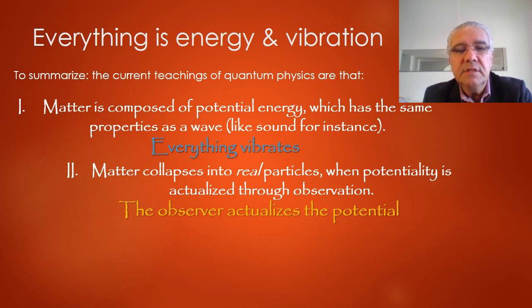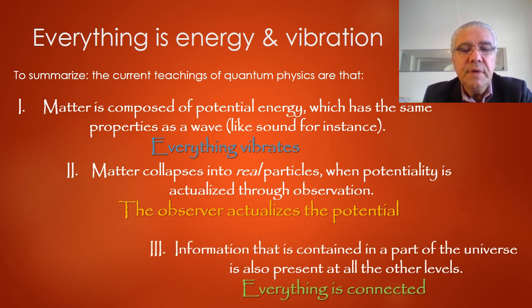Second, that matter collapses into real particles when that potentiality is actually actualized through observation. Second powerful statement, the observer actualizes the potential. And number three, that information that is contained in a part of the universe is also present at all other levels. That means it can be extracted instantaneously in all other parts of the universe, and that's the quantum entanglement. So everything is connected. Those are three very powerful implications of quantum physics.